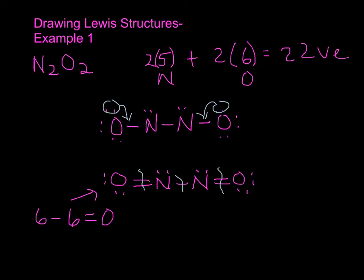Let's do the same for nitrogen. Nitrogen has five valence electrons. Counting those assigned: one from the single bond, two from the double bond — that's three — plus the lone pair gives five electrons assigned. Five minus five equals zero, so the formal charge on nitrogen is also zero. Overall, this Lewis structure has zero formal charge everywhere.